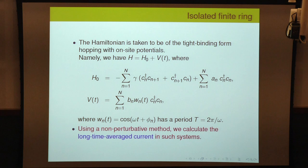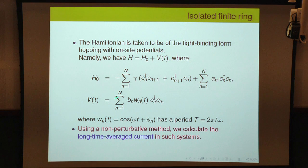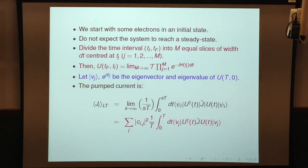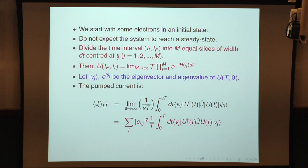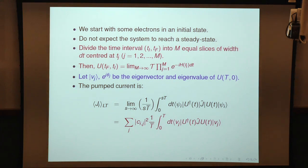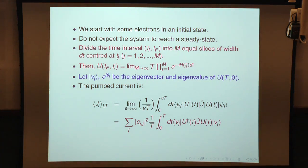Using a non-perturbative method, we calculate the long-time average current in such systems. In a quantum system you start with an initial state and let it evolve according to unitary Hamiltonian evolution — the Schrödinger equation. Since this is purely unitary evolution, we do not expect the system to reach a steady state. We instead find the long-time average current, which can be calculated with an exact, non-perturbative formula, and use it to determine whether charge is pumped in the clockwise or anti-clockwise direction.